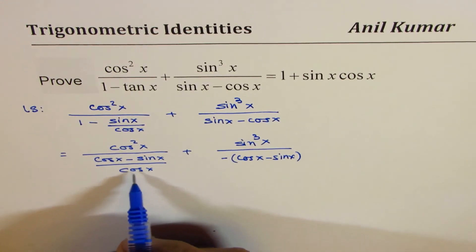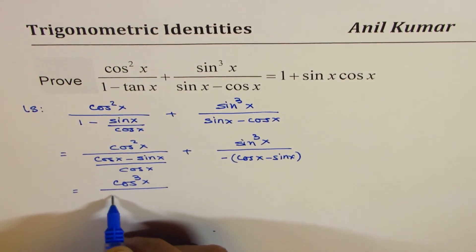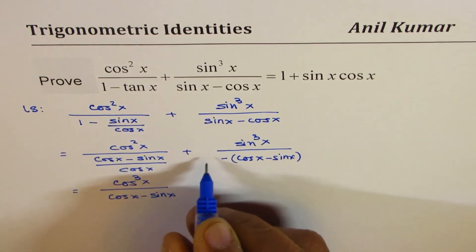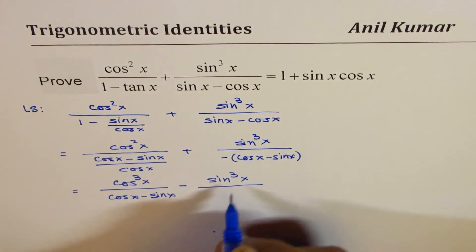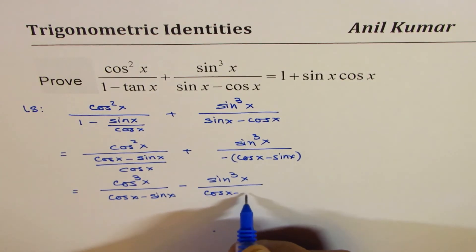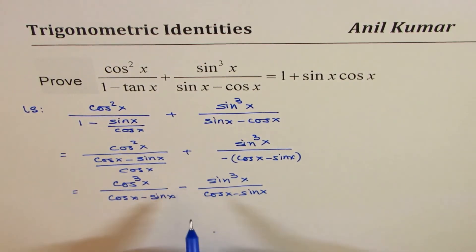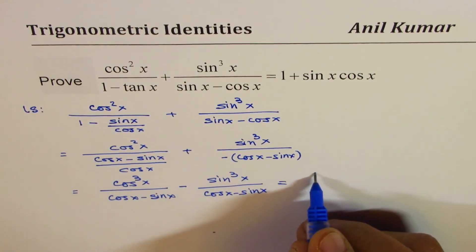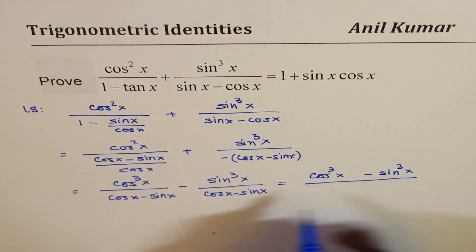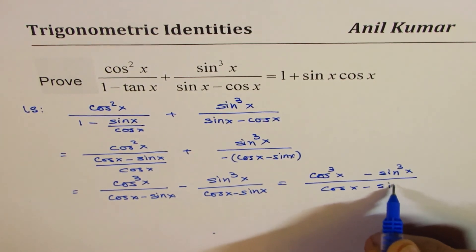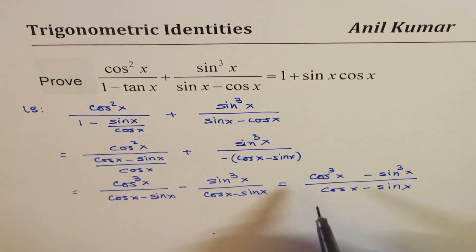Taking cos x in the numerator gives us cos cube x divided by cos x minus sine x, and plus and minus makes it negative sine cube x divided by cos x minus sine x. So what we get here is a numerator which is cos cube x minus sine cube x, that is a cube minus b cube, divided by cos x minus sine x times cos x.